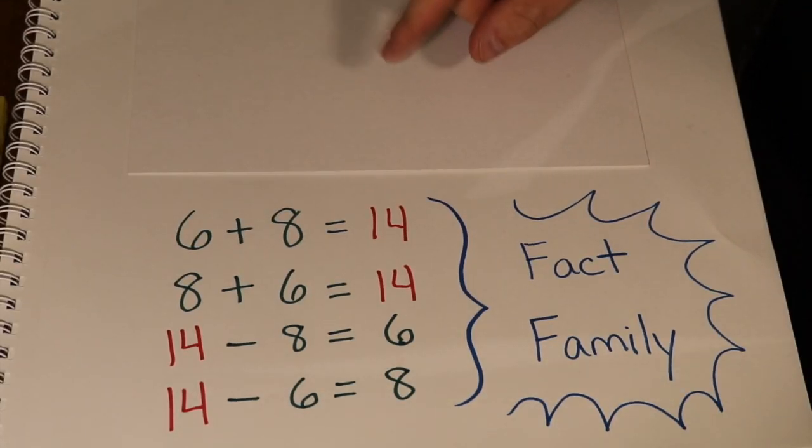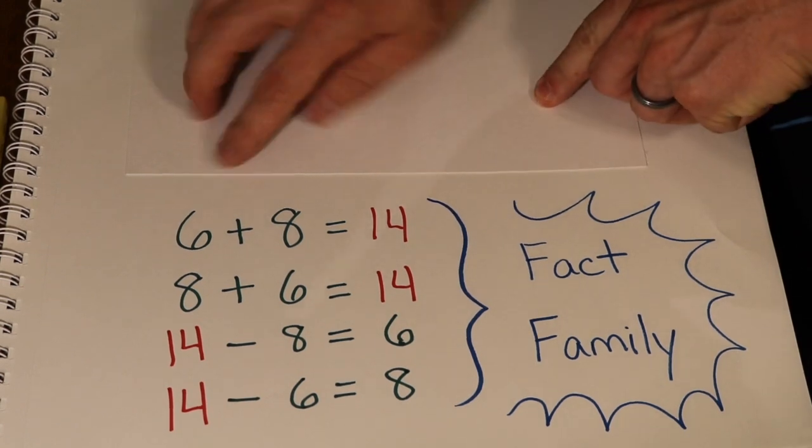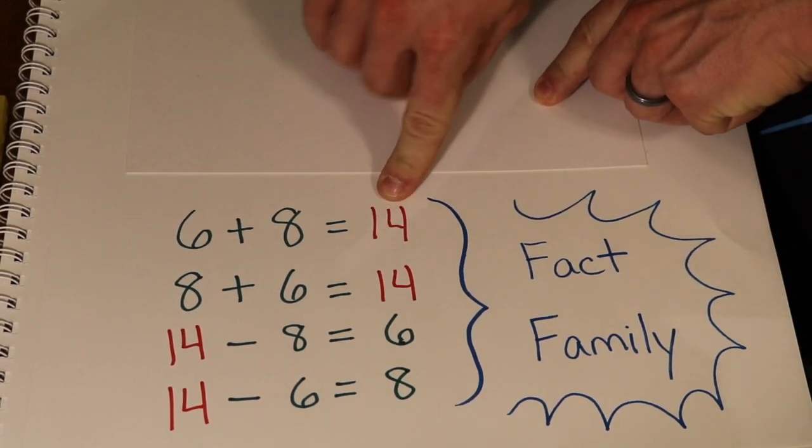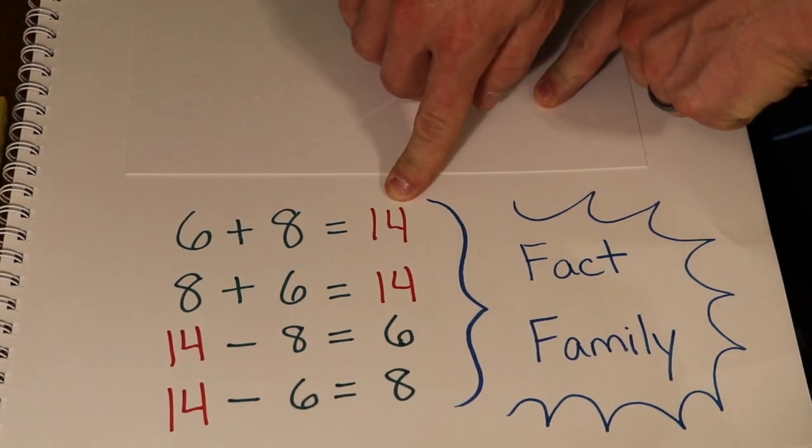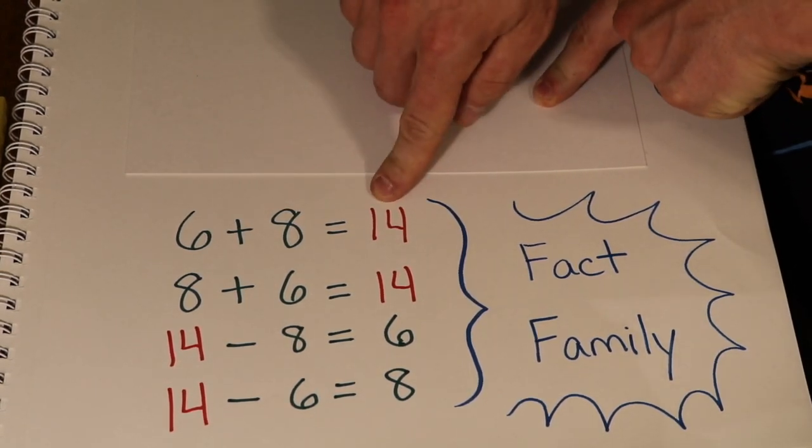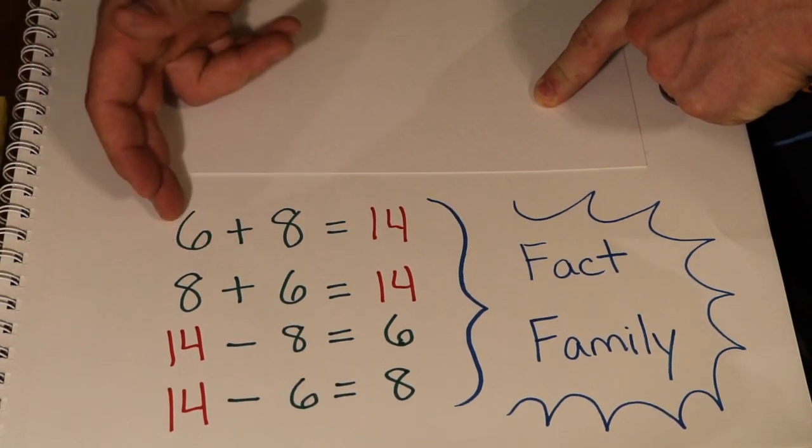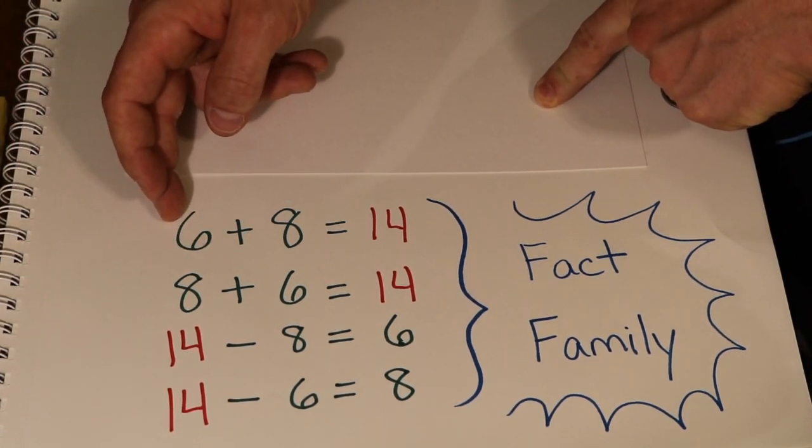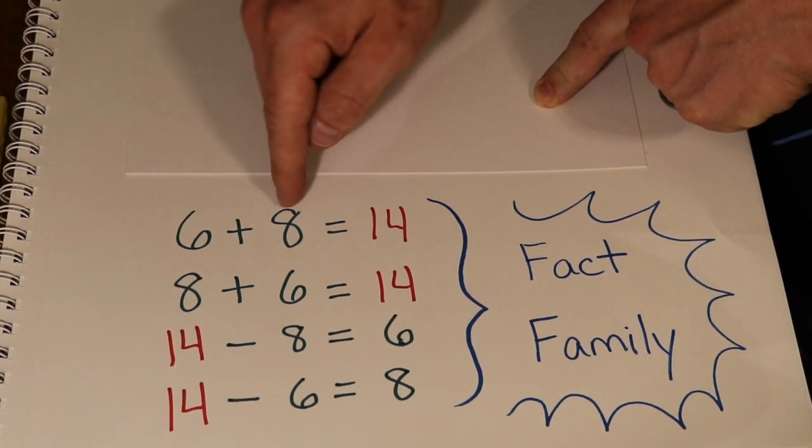What I want to show you right here is an example of a fact family. If we are taking three numbers—6, 8, and 14—this is a fact family. These three numbers interact with each other. Here are four different ways that they interact, different ways you can look at 6, 8, and 14.